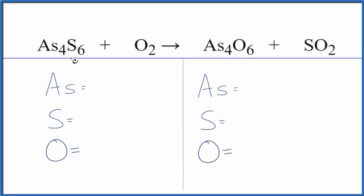In this video we'll write the balanced equation for As4S6 plus O2. This is tetra arsenic hexasulfide plus oxygen gas. So the first thing we'll do, we'll count the atoms up and then we'll balance the equation. We have four...